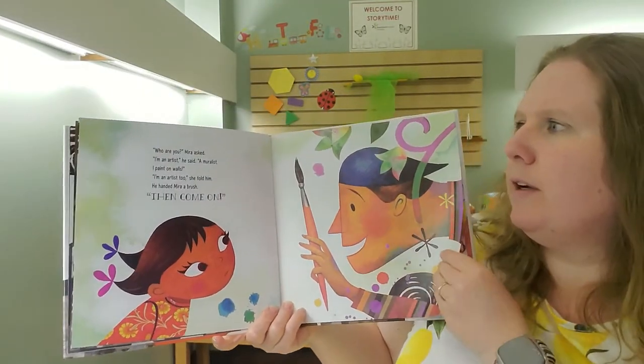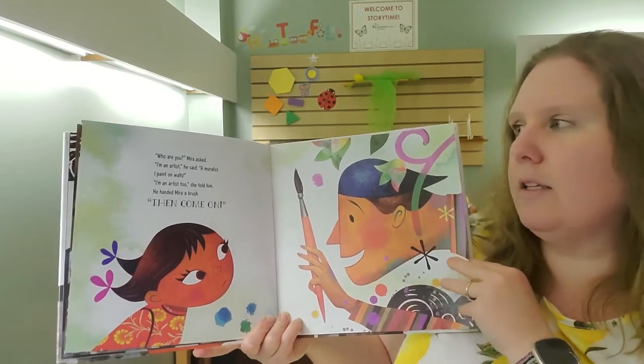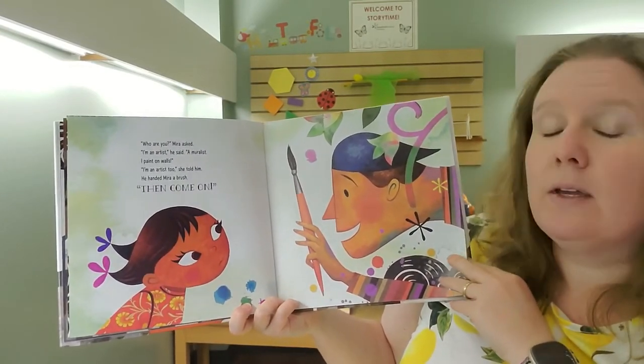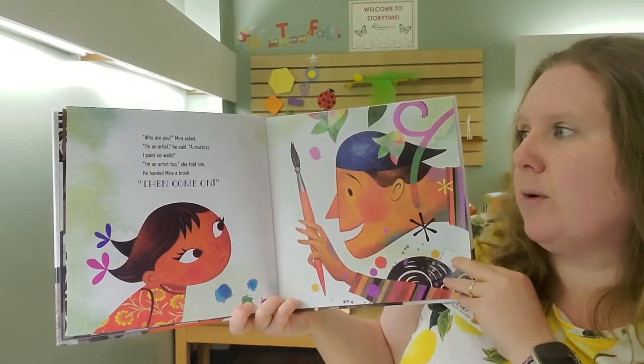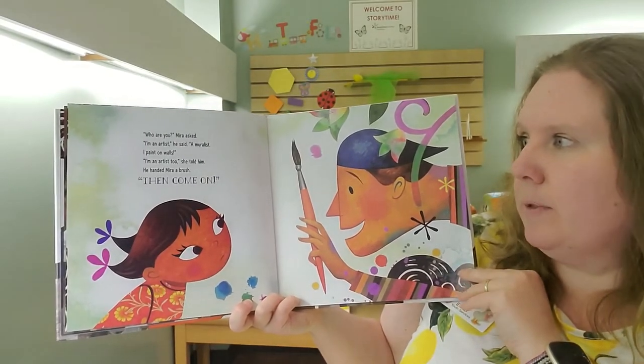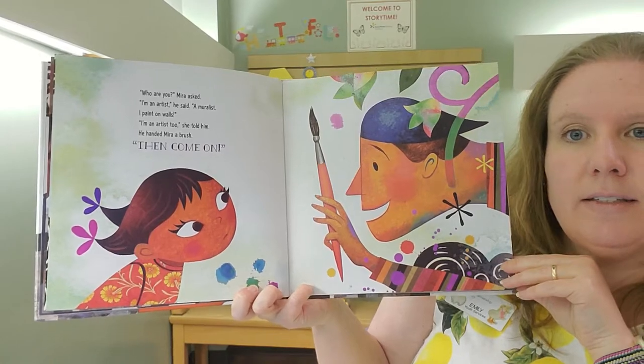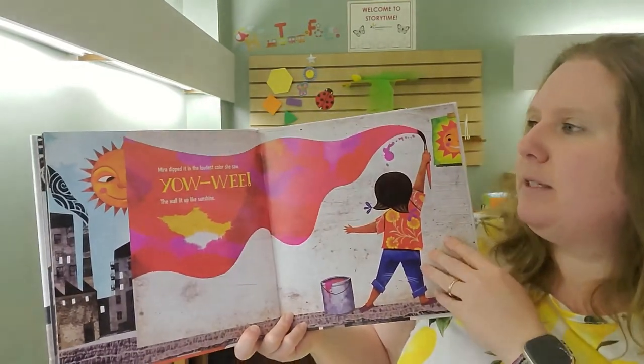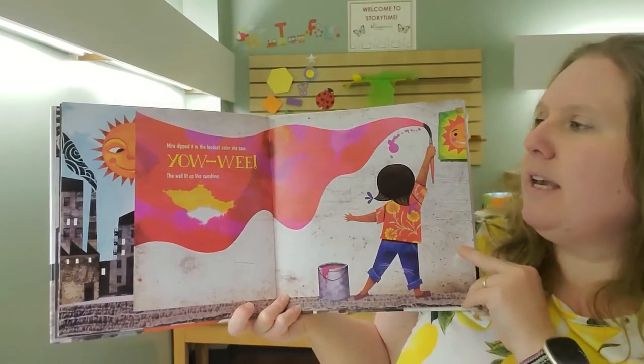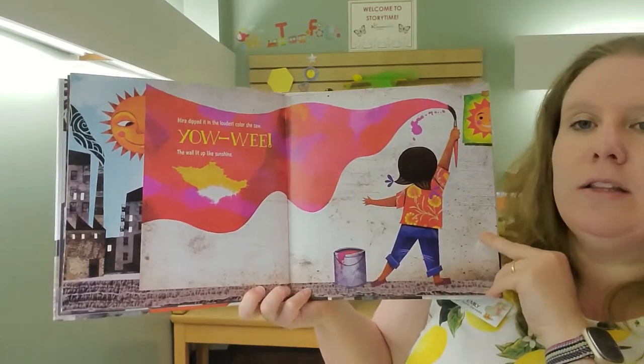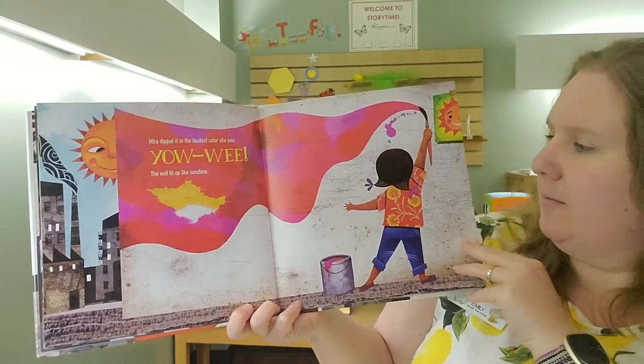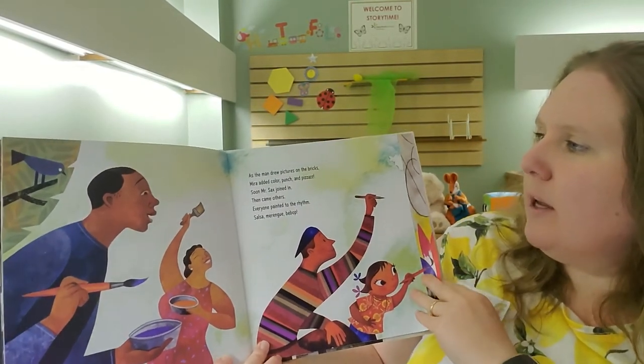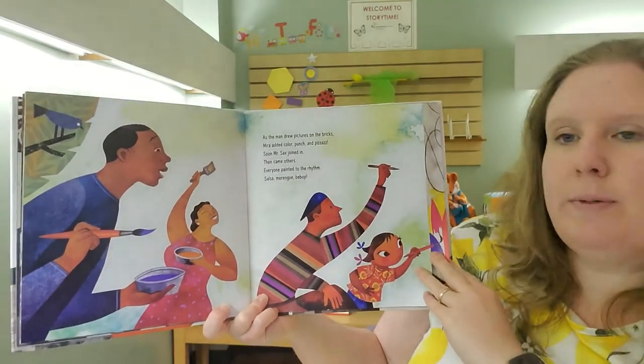Who are you? Mira asked. I'm an artist, he said. A muralist. I paint on walls. I'm an artist too, she told him. He handed Mira a brush. Then come on. Mira dipped it in the loudest color she saw. Yowie! The wall lit up like sunshine. As the man drew pictures on the bricks, Mira added color, punch, and pizzazz.